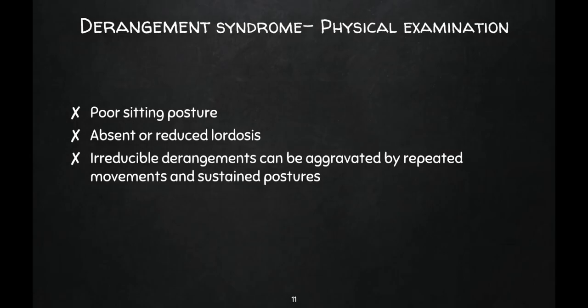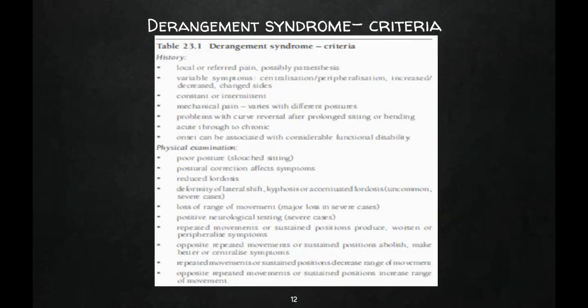In the physical examination of derangement syndrome, poor sitting posture will be found and absent or reduced lordosis will be present. Irreducible derangement can be aggravated by repeated movements and sustained postures. History criteria include local or referred pain, possible paresthesia, variable symptoms, centralization and peripheralization, symptoms that can increase or decrease, and pain that can shift sides. Pain will be constant or intermittent and mechanical pain will be present.